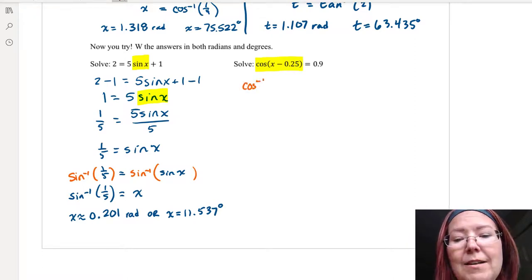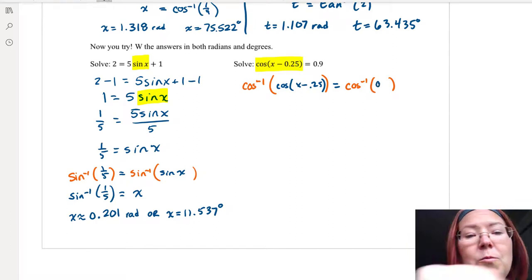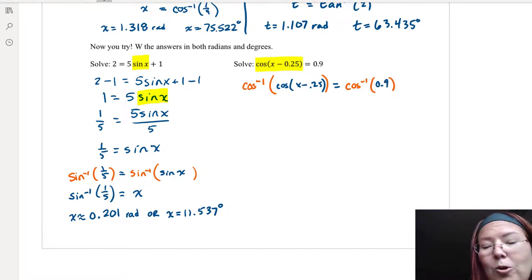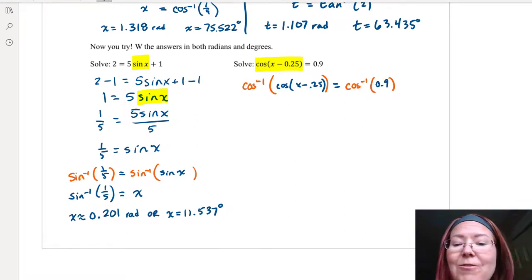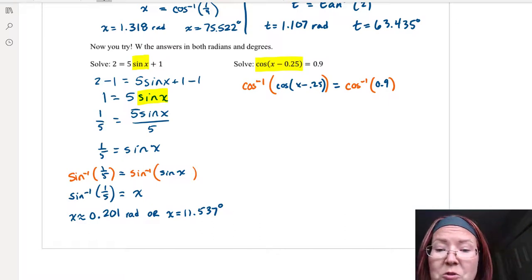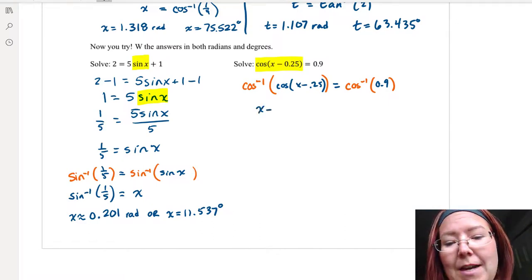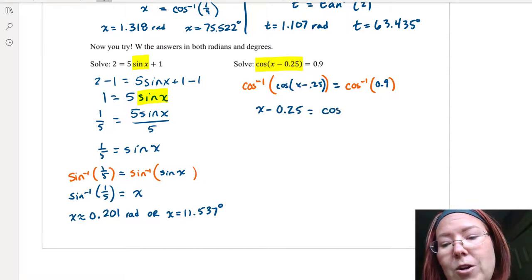I'm going to do inverse cosine of cosine of x minus 0.25. And then on the other side, I'm also going to do inverse cosine of 0.9. Now taking the cosine composed with the inverse cosine removes the cosine parts, leaving me with x minus 0.25 equals inverse cosine of 0.9.